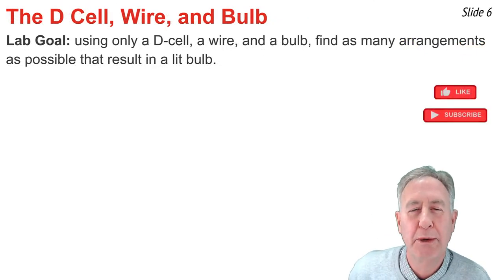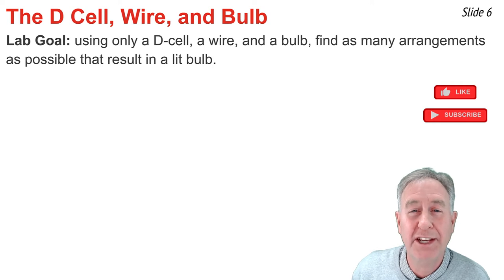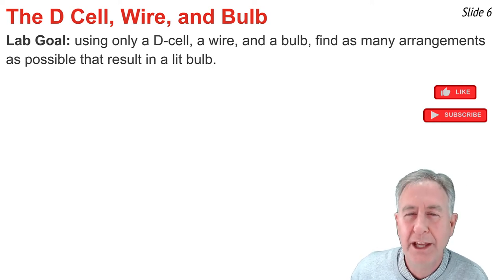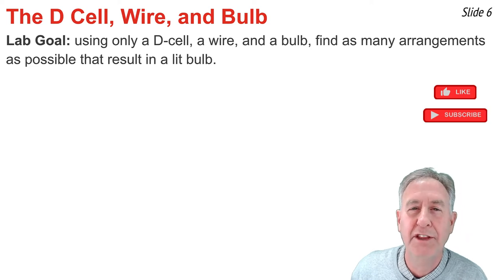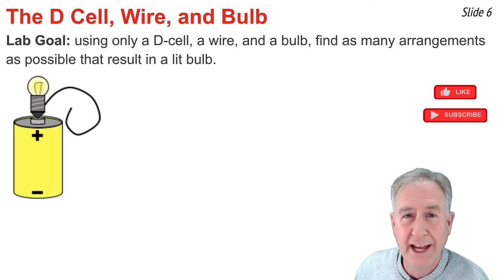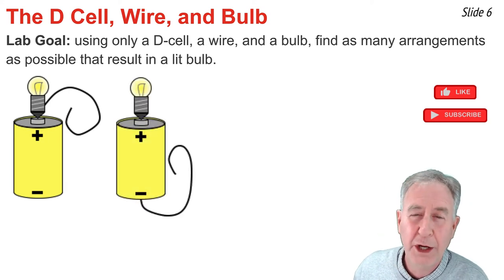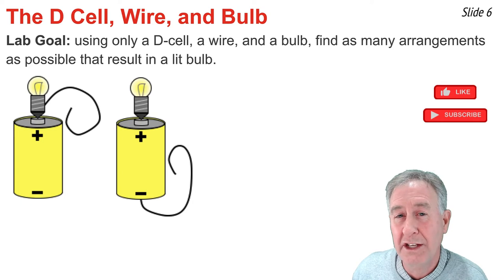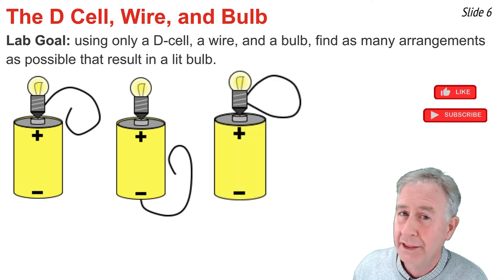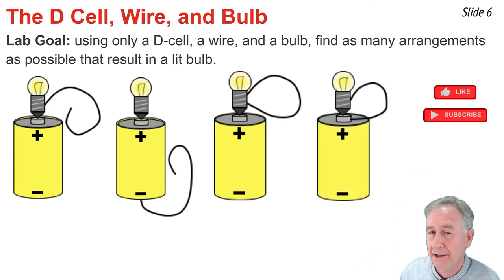A common physics experiment involves giving students a D-cell, a wire, and a bulb, and asking them to find as many arrangements as possible that result in a lit bulb. As students begin, they typically find the unsuccessful arrangements first, such as this one here, which lacks a loop formed by the wire, as does this arrangement here. Once students realize they need to form a loop, they may try something like this with their wire — this is a loop, but it doesn't loop from the positive to the negative terminal, nor does this one.